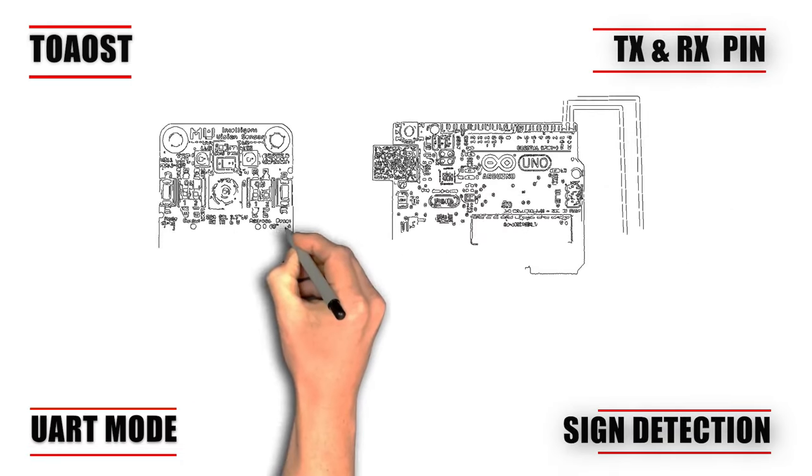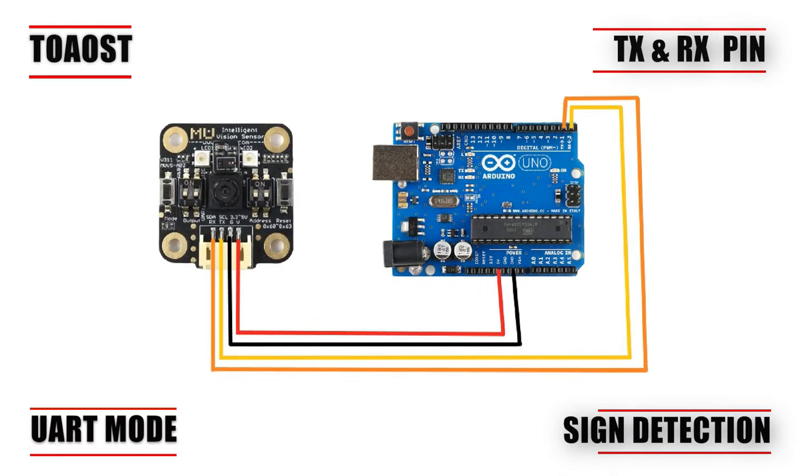In UART communication mode, only two pins are required: TX, the transmitter pin, and RX, the receiver pin. The transmitter pin of the MU sensor will be connected to the Arduino receiver pin, and the receiver pin of the MU vision sensor will be connected to the Arduino transmitter pin.